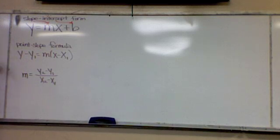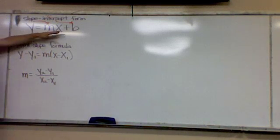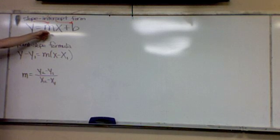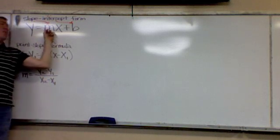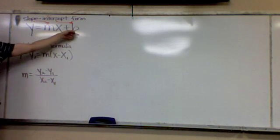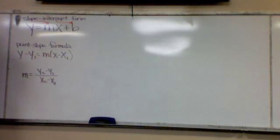Some of you have been waiting for this because you like this form — slope-intercept form. Here it is: y equals mx plus b. What's m? Slope. And b is the y-intercept. That's why it's called slope-intercept form — it's got both of those in there.